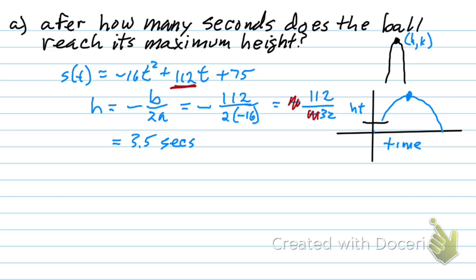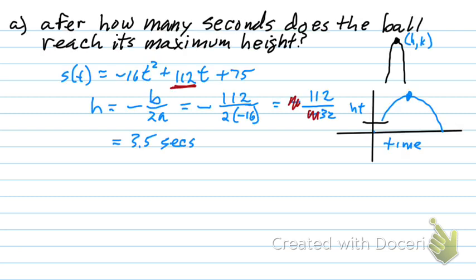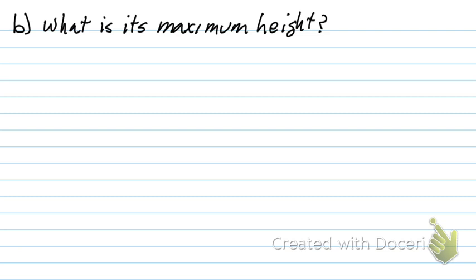Let's look at part B. How high does it get? Well, looking back at the drawing again, the vertex is at H and K. I found H. How do I find K?